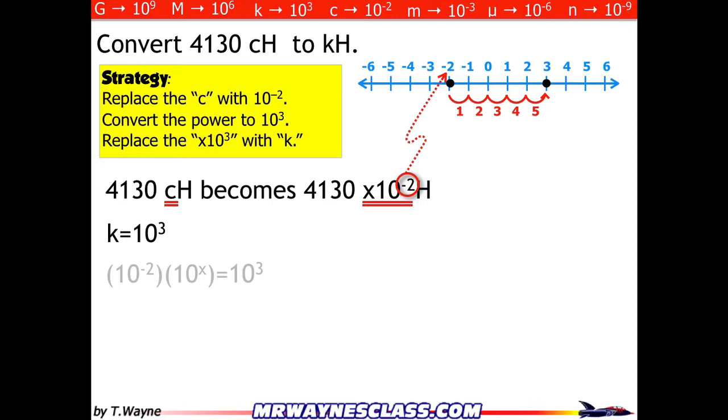So on the exponent, if I'm increasing it by a factor of 5 powers of 10, then on the mantissa, I've got to decrease it by 5 powers of 10. So that means I've got to move the decimal place 5 times to the left. So now it becomes 0.04130.